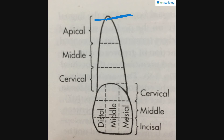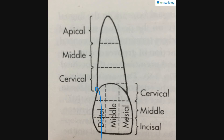In the crown portion you can see the cervical, middle, and incisal portions. The tooth is also divided vertically into distal, middle, and mesial portions. The mesial portion, as mentioned previously, is the portion towards the mid-sagittal plane or midline. Then comes the middle portion and then the distal portion. This is the basic tooth division.